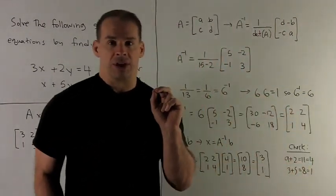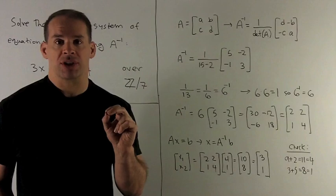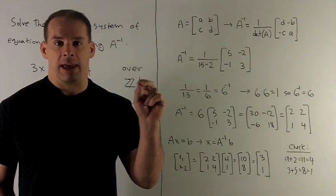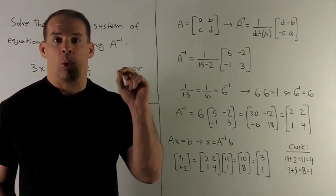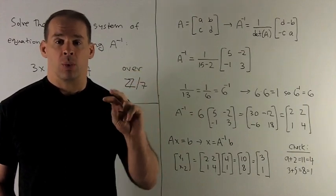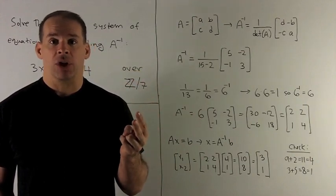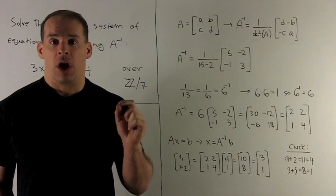Now, what's the equation for the inverse of a 2 by 2 matrix? If A is [a, b; c, d], we're going to take 1 over the determinant. We're going to switch the entries on the diagonal, negate the entries off the diagonal.